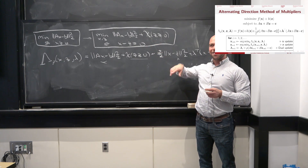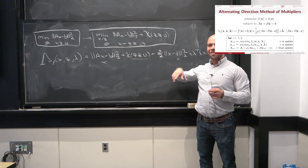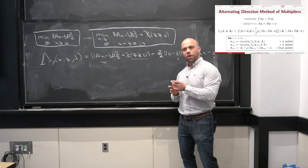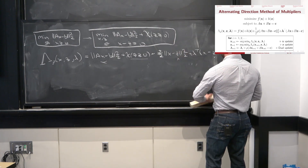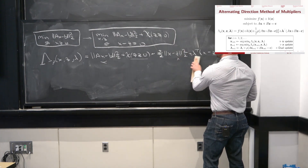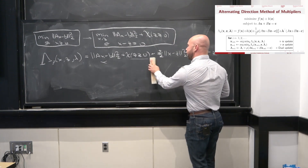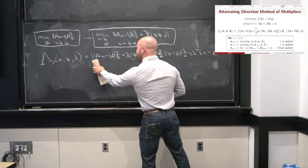Let's summarize our ADMM algorithm for non-negative least squares. Step one: x ← (2A^T A + rho I)^{-1} (A^T b + rho*z - lambda). Step two: z ← max(0, lambda/rho + x) element-wise. Step three: lambda ← lambda + rho*(x - z). Three lines of code — if you cycle through this, it converges to the solution of non-negative least squares unconditionally for any choice of rho > 0.